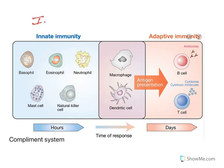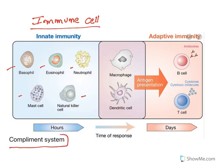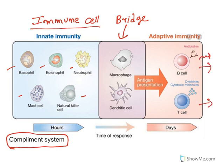Immune cells in innate immunity are basophils, eosinophils, neutrophils, mast cells, natural killer cells, and the complement system. Macrophages and dendritic cells form a bridge between innate and adaptive immunity. In adaptive immunity there are two cells: B cells and T cells. B cells secrete antibodies.